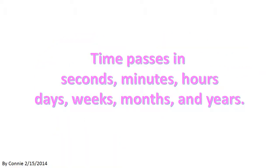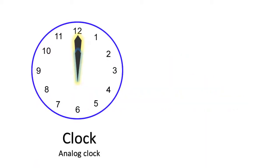Time passes in seconds, minutes, hours, days, weeks, months, and years. This is an analog clock. It has two hands pointing at the number 12 and the numbers 1 through 12 arranged clockwise on its face.